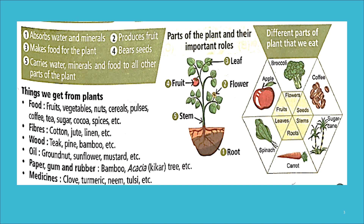More things we get from plants — in food: fruits, vegetables, nuts, cereals, pulses, coffee, tea, sugar, cocoa, spices, and oil. In fibers: cotton, jute, and linen. Wood: teak, pine, and bamboo. Oil: groundnut, sunflower, and mustard. We also get paper, gum, and rubber from bamboo, acacia, and rubber trees.